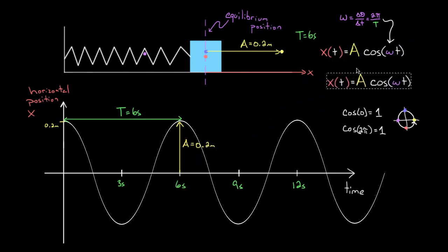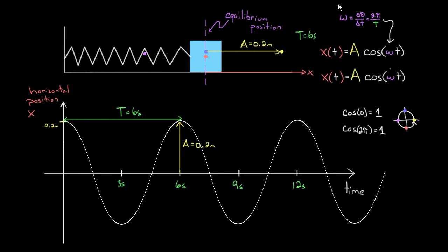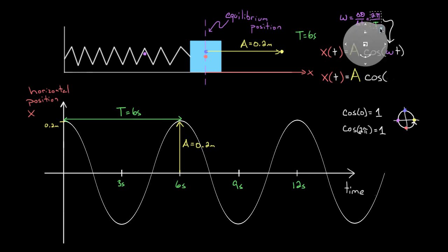So if we take this function—instead of writing omega, we just put in two pi over T (the period). Sometimes omega is called the angular frequency in this case; you'll hear it as angular velocity or angular frequency. We just put that in for omega and then multiply by t.